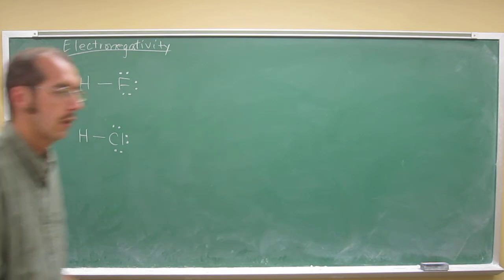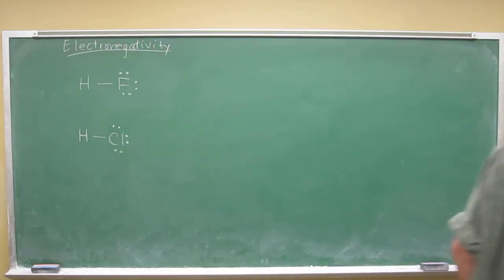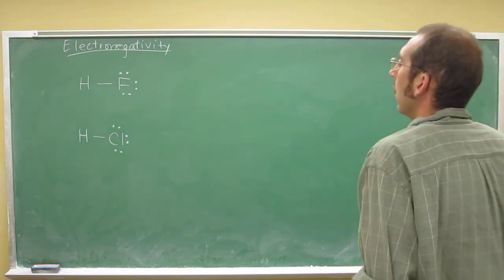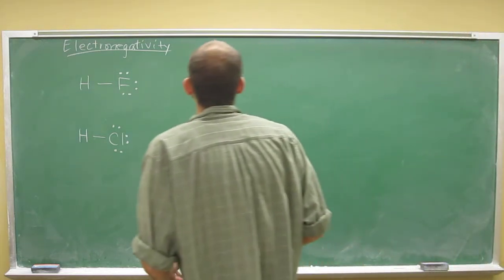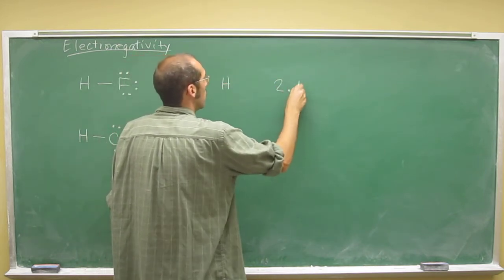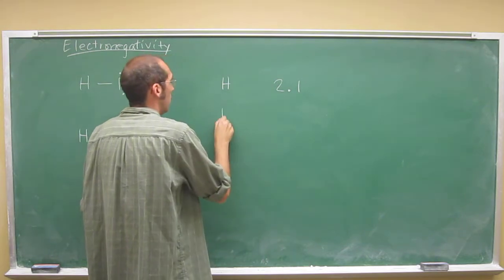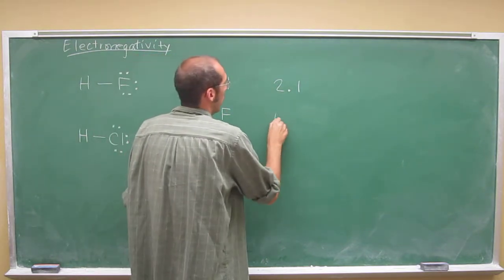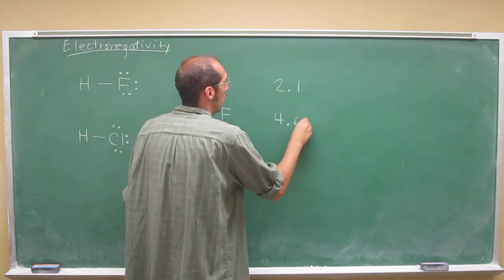If you look at your electronegativity table, which I'm about to do right now, you'll see that the electronegativities of these elements are H is 2.1, F is 4.0